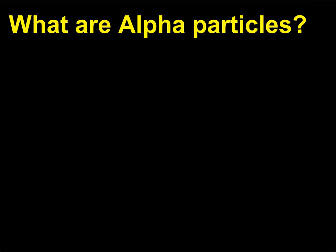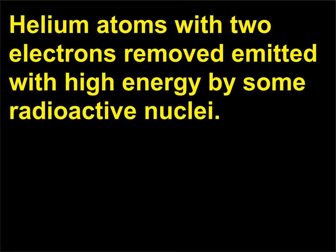What are alpha particles? They are helium atoms with two electrons removed, emitted with high energy by some radioactive nuclei.